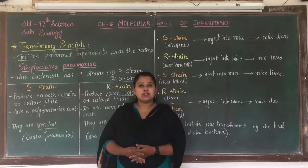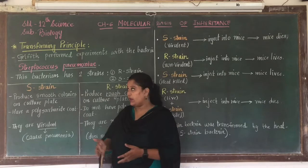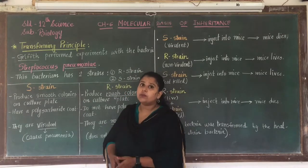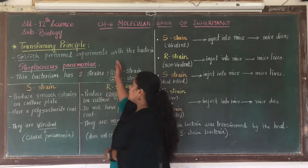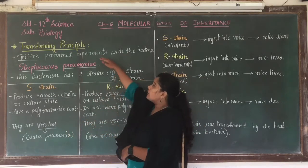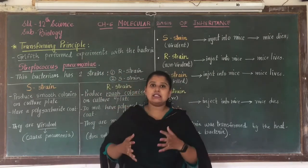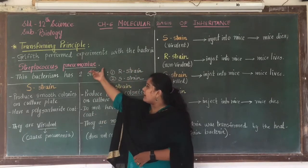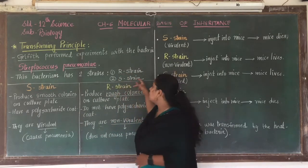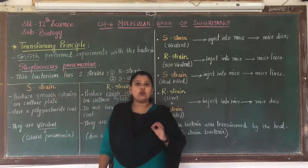The next topic of this chapter is the transforming principle, also known as Griffith's transformation experiment — one of the important and frequently examined topics. Griffith performed experiments with the bacteria Streptococcus pneumoniae, working with two strains: the R strain and the S strain.